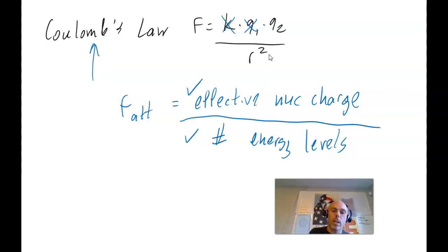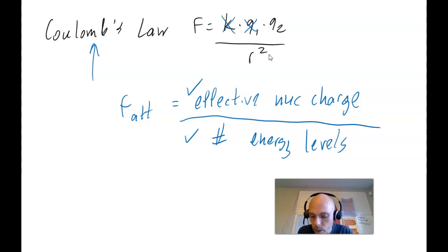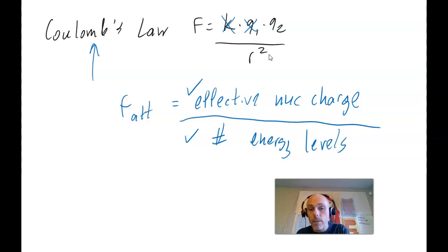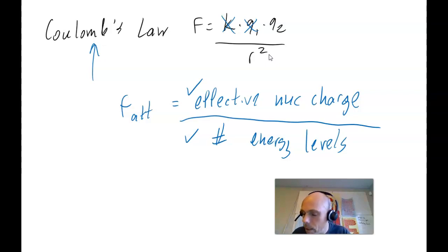The force of attraction between the nucleus and one valence electron at a time is directly related to the effective nuclear charge — more effective nuclear charge means greater force of attraction — and inversely related to the number of energy levels. If there are more energy levels, if the distance is greater, that force goes down.